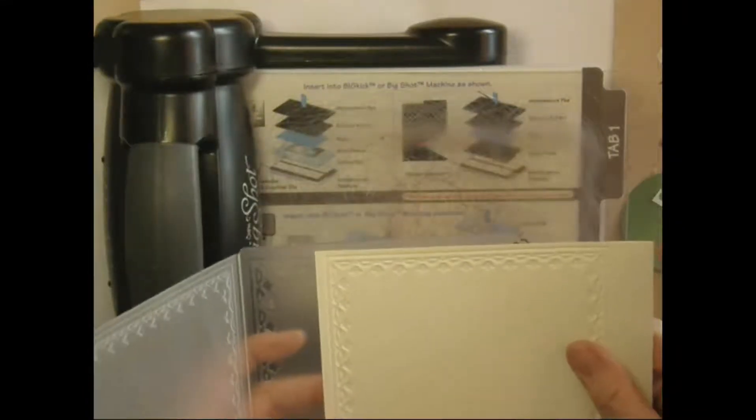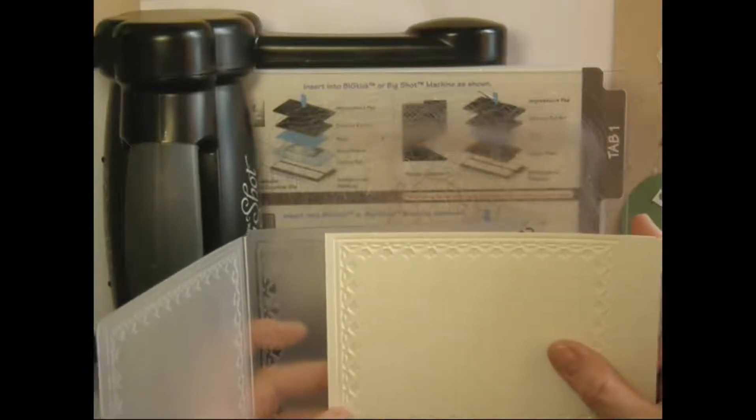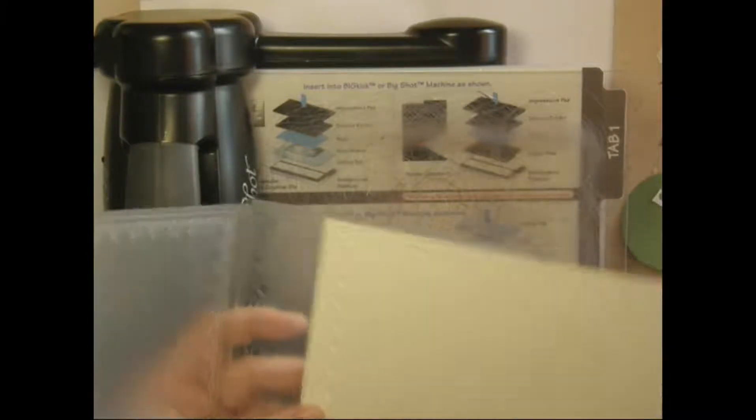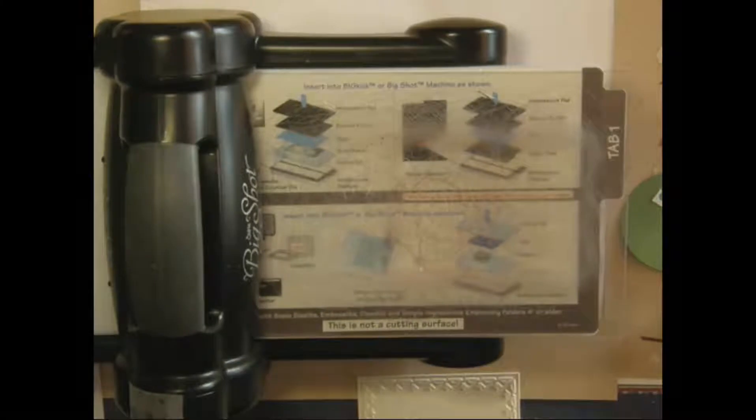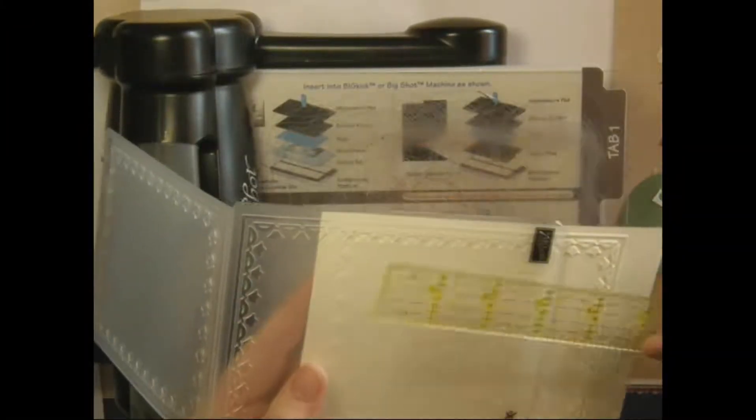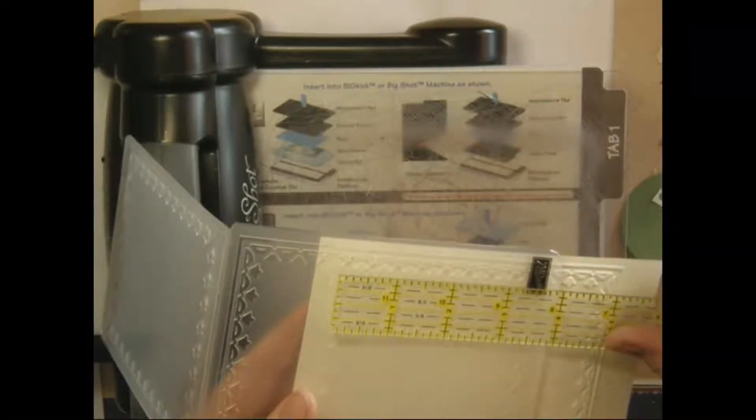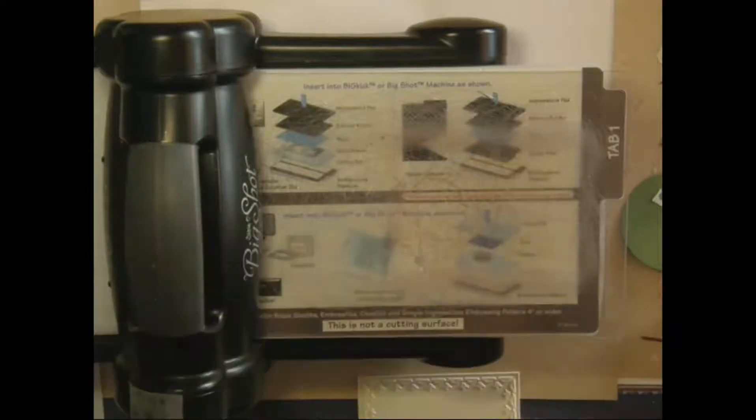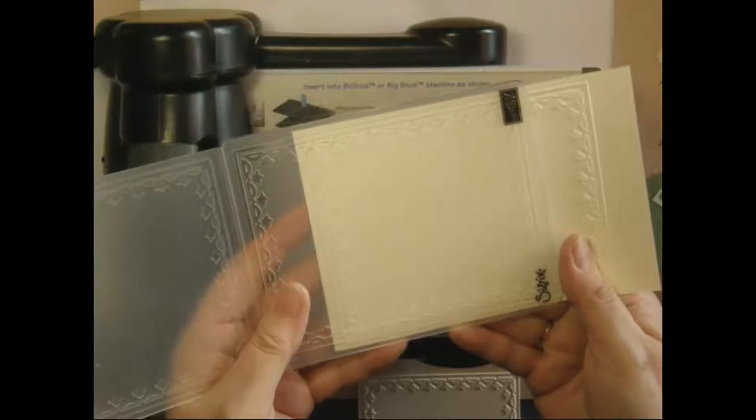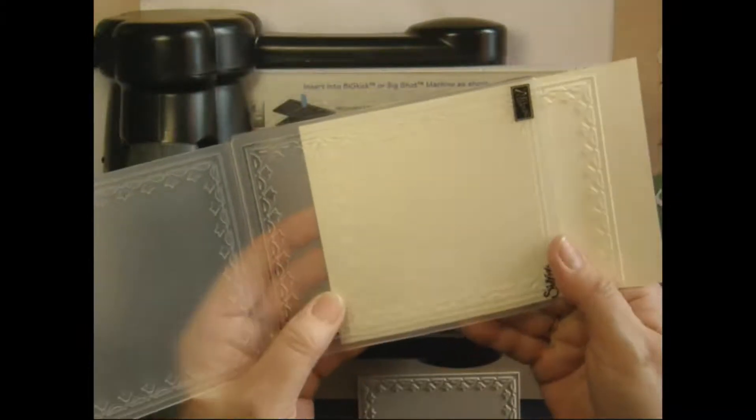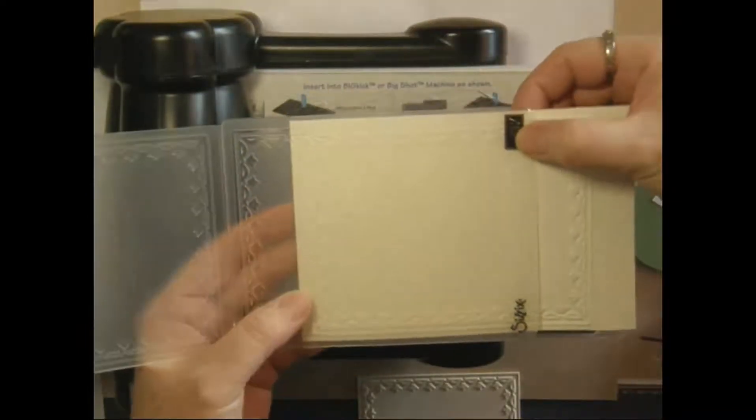So you lay it on your embossing folder to the size that you want. So this one is, say roughly, we want one to be three and three quarters. So you line up your paper that's been embossed already with the embossed images on your cardstock.